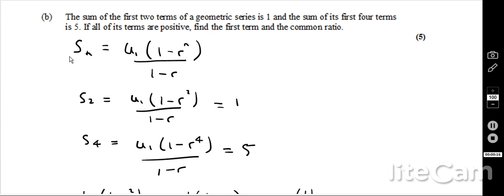Okay, so the first thing when you do these kind of questions is to write out the sum formula for your geometric, and this is given in the formula book. So there we go, u1 is the first term, r is the common difference. Once I've got that, I can actually then start filling out the information.